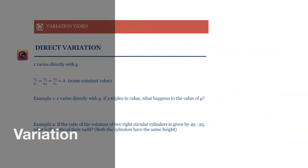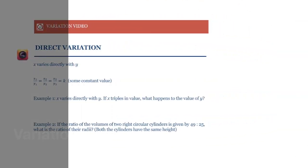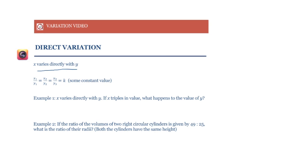In this topic we'll look at direct variation, inverse variation, and joint variation. Let's start with direct variation. X varies directly with Y — this means that when X increases, Y increases proportionally, and when X decreases, Y decreases proportionally.